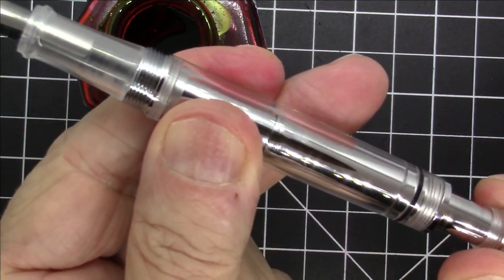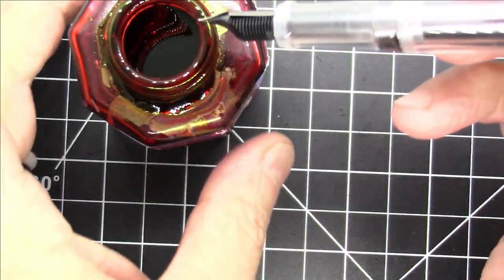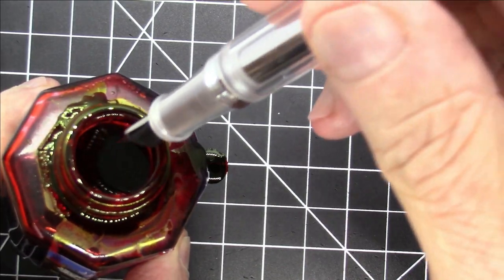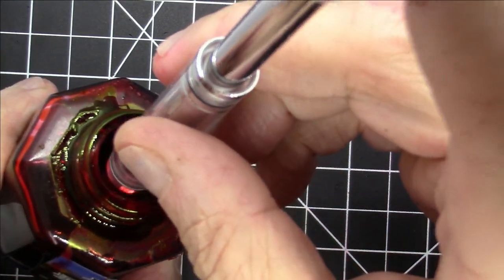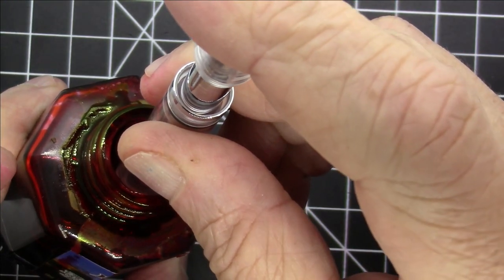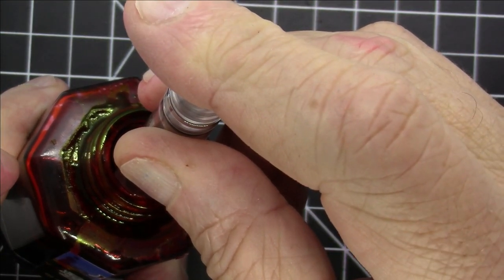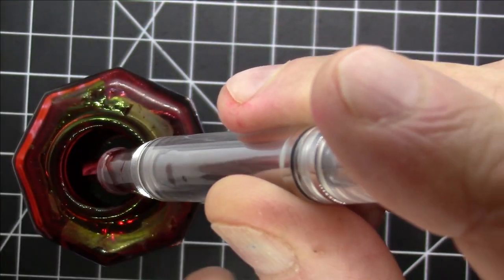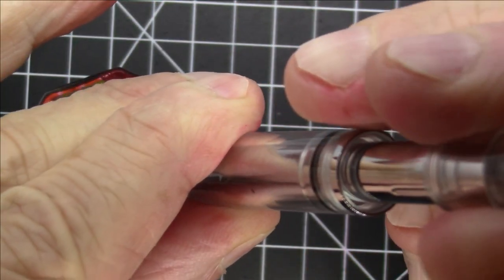All right, let's uncap this pen and see how it fills. So like we said we're going to pull this out. Again it fills on the downstroke. So let's see if we could do this in such a way that it's going to be visible nicely on camera. So I'm going to immerse this, I'm going to push it down and hopefully it was drawing up ink. Let's expel the ink and see how much it actually drew up.